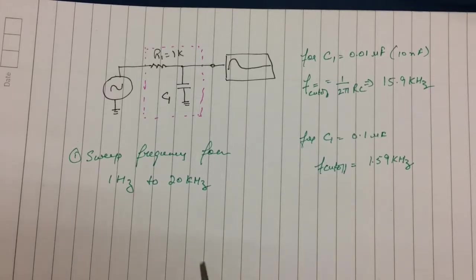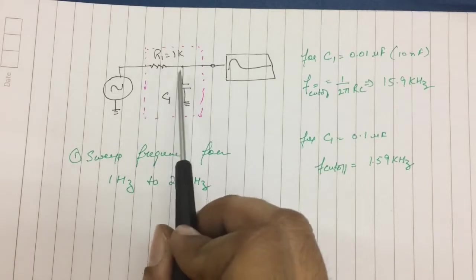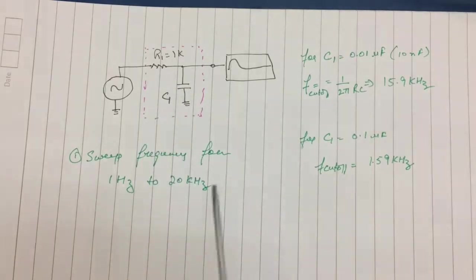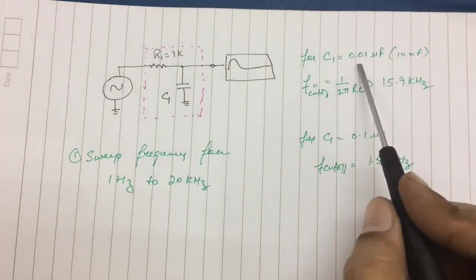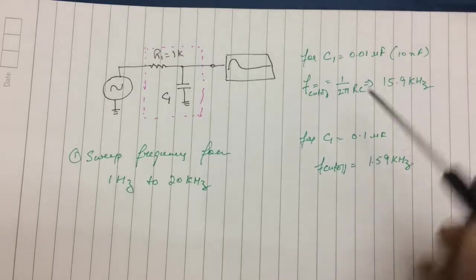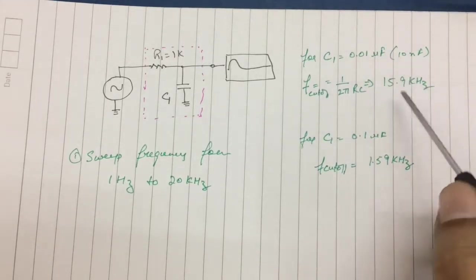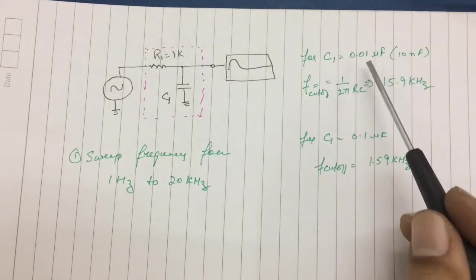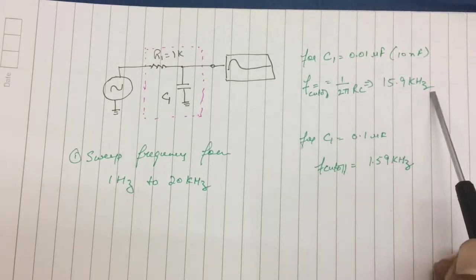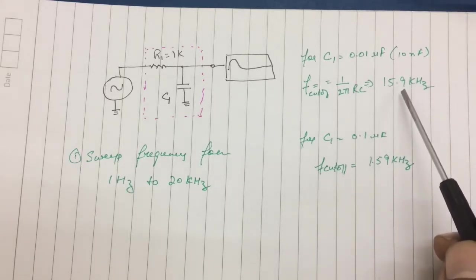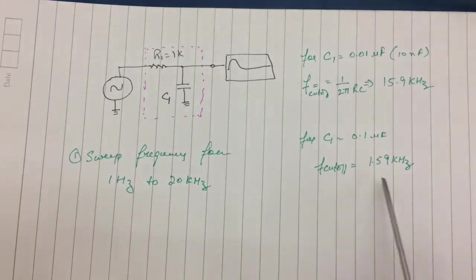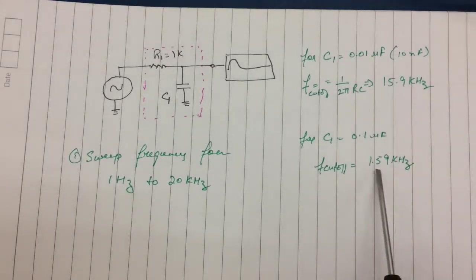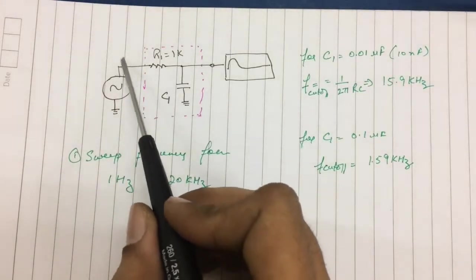A Bode plot tells us the frequency response of a system. In this case, I've used a simple resistor capacitor to form an RC filter, a low pass filter. With a fixed resistor value, I'm using two capacitor values: 0.1 microfarad and 0.01 microfarads interchangeably. Theoretically, the 0.01 microfarad should give me 15.9 kilohertz or approximately 16 kilohertz cutoff frequency, and the 0.1 microfarad should have a relatively low cutoff frequency of 1.6 kilohertz approximately.